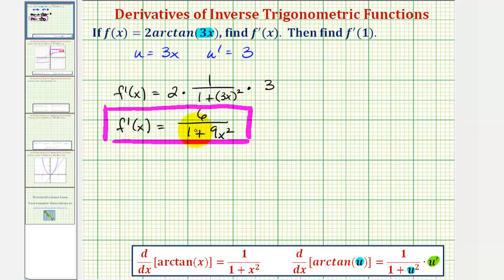And now for the second part, we want to evaluate the derivative function at x equals one. So f prime of one would be equal to six divided by the quantity one plus nine times one squared, well that would be six tenths, which does simplify to three fifths, since we have a common factor of two.